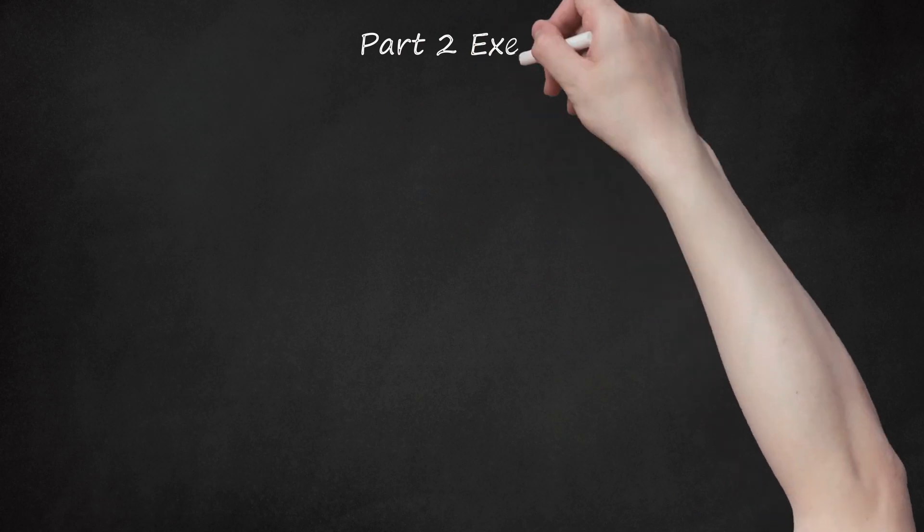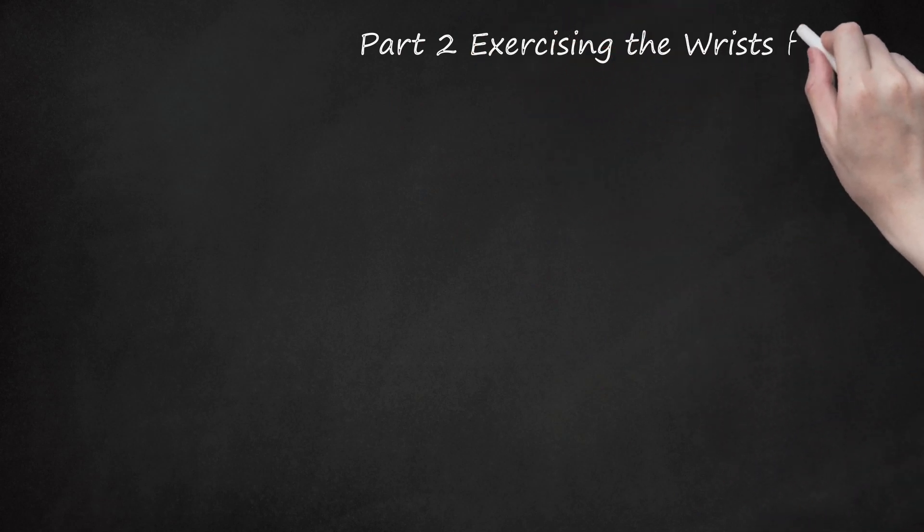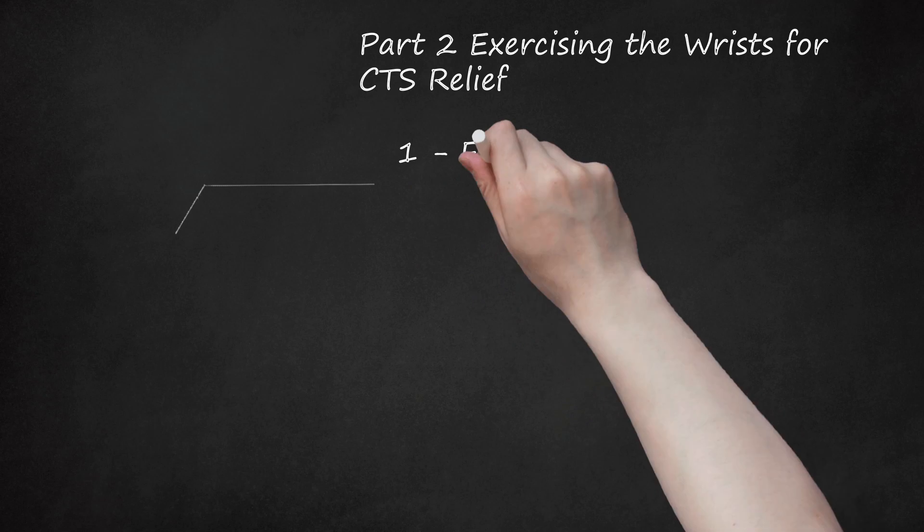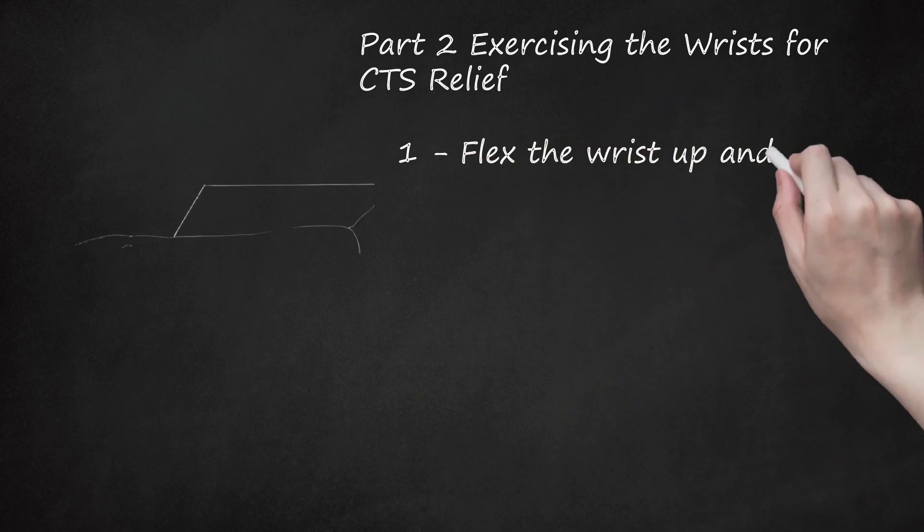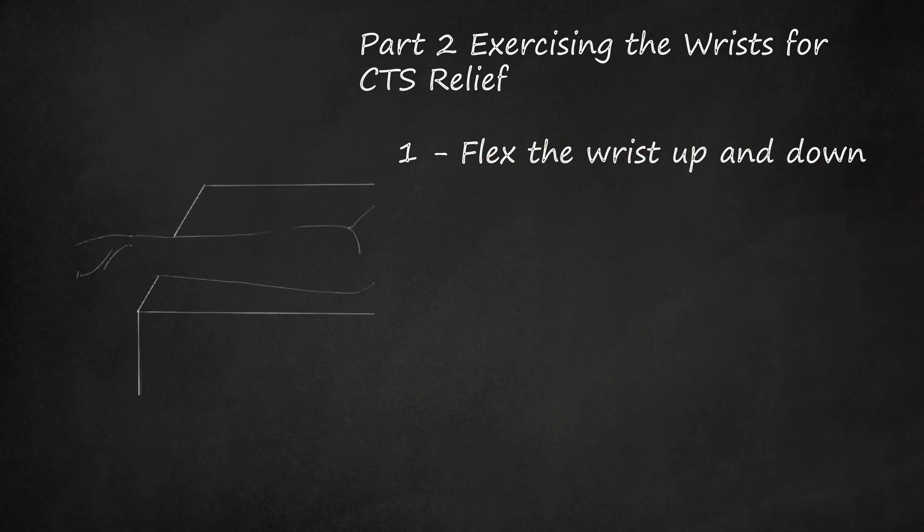Part 2: Exercising the Wrists for CTS Relief. Flex the Wrist Up and Down. Carpal Tunnel Syndrome reduces mobility in the wrist and can make it difficult to do even the most basic manual functions. One way to strengthen the wrist is by building up strength using repetition of gentle movements. Flexing the wrist up and down can help increase mobility and rebuild your range of motion.